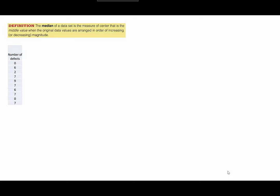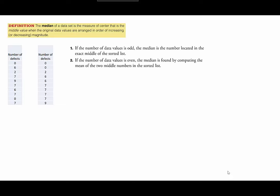In order to find the median, we will need to order the data set, so we'll place them in ascending order. If the number of data values is odd, then the median is the number located in the exact middle of the sorted list.